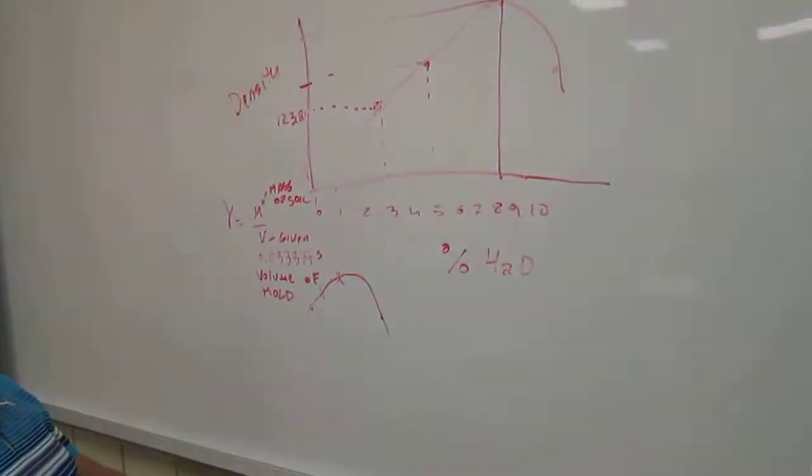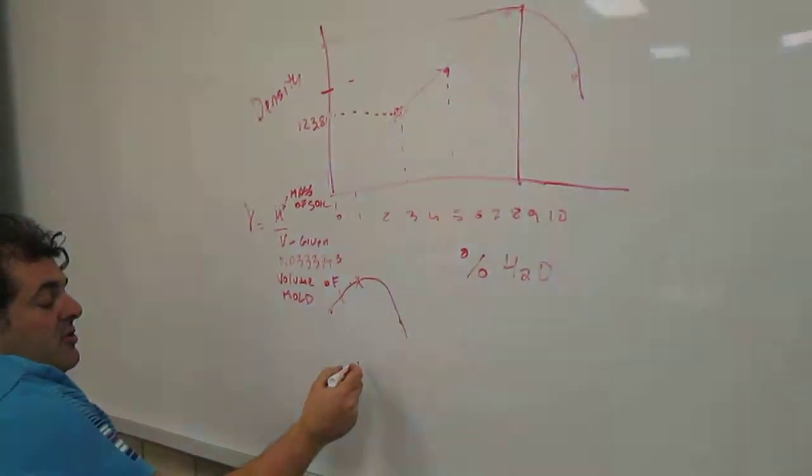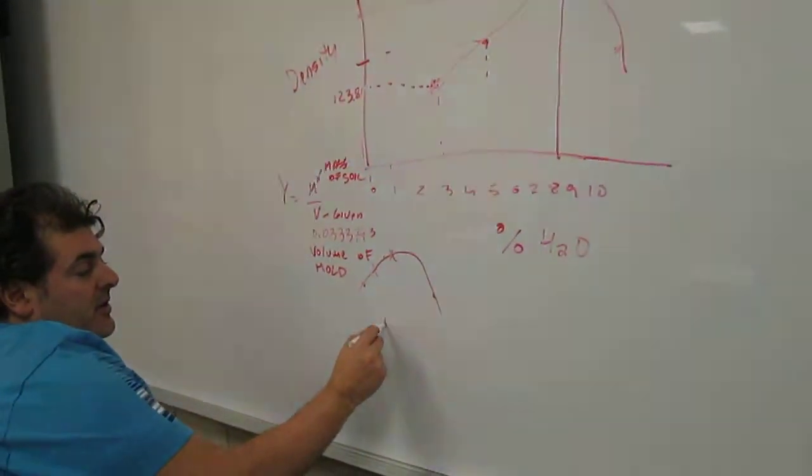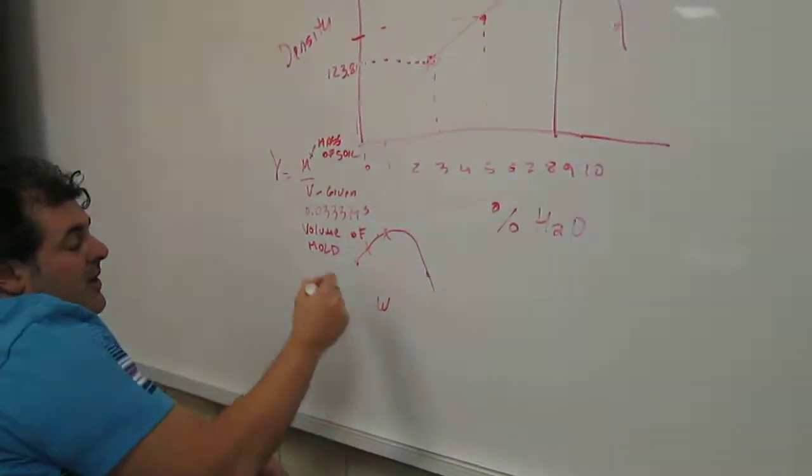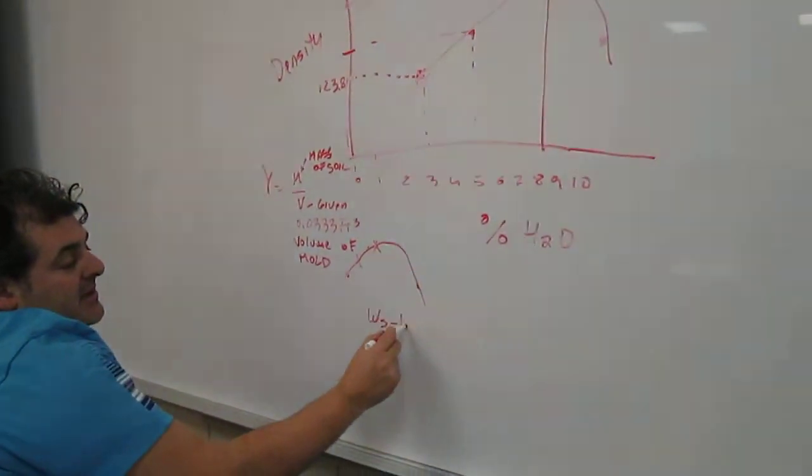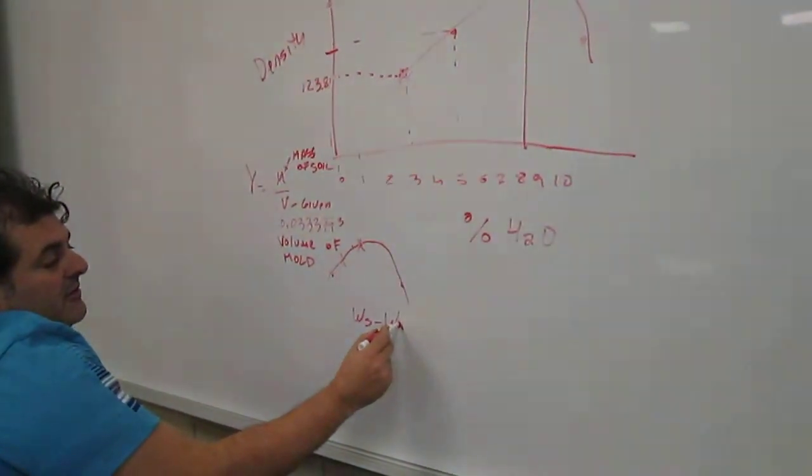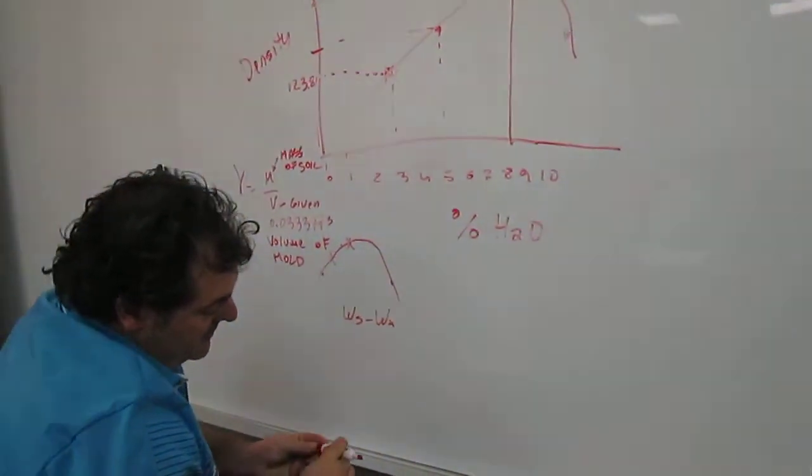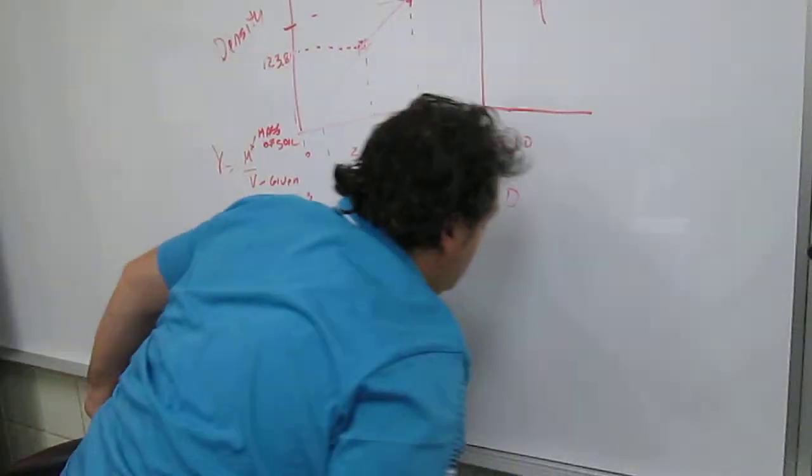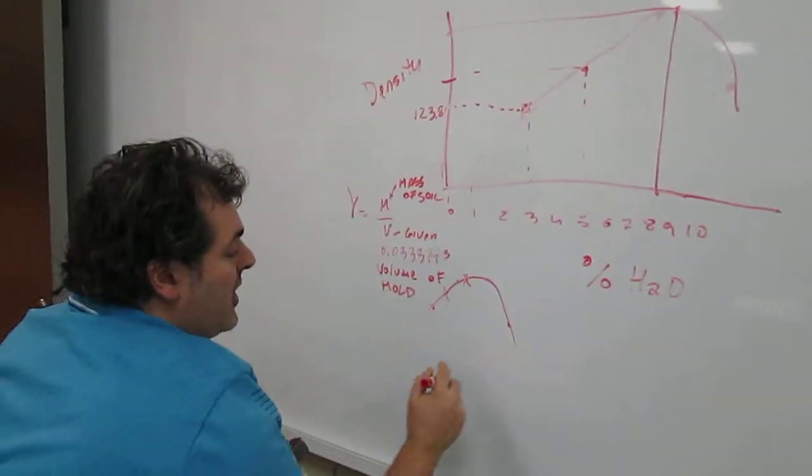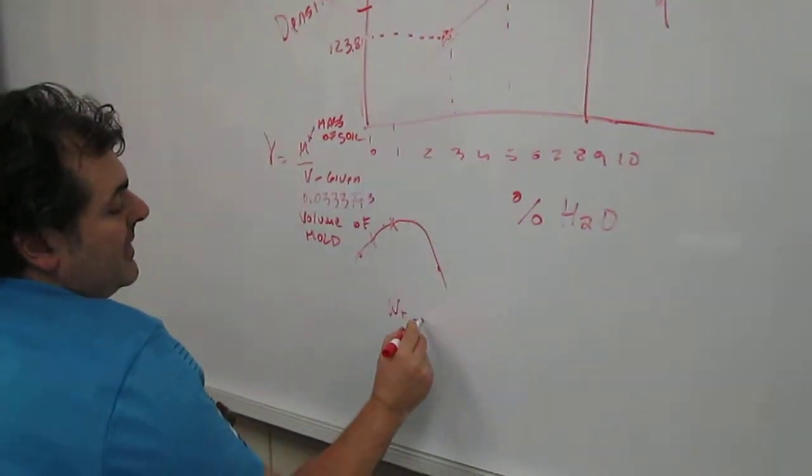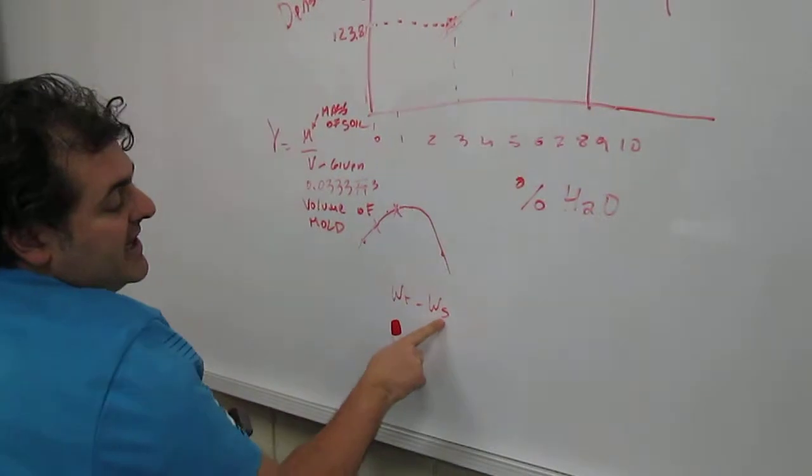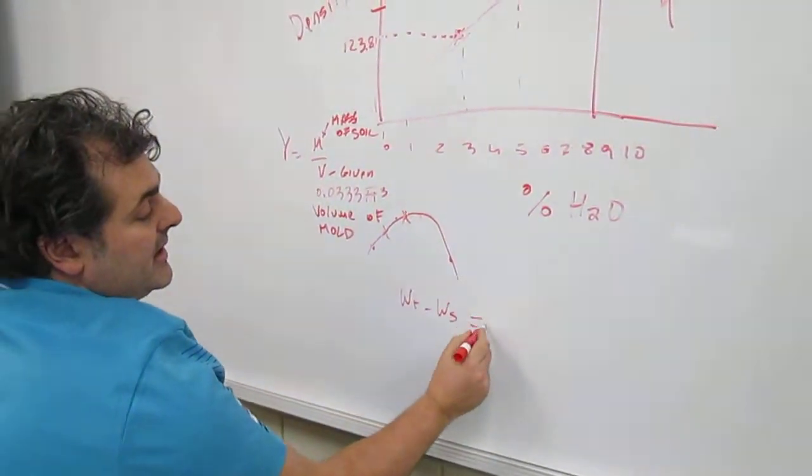Is that it? And for the moisture, all you do is you do the total weight of soil minus the weight of water. I'm sorry, you do the total weight minus the weight of soil, which is after oven drying, and that gives you the weight of water.